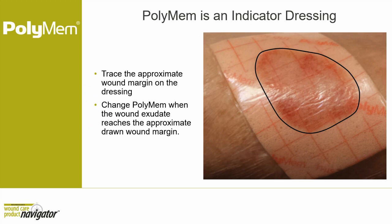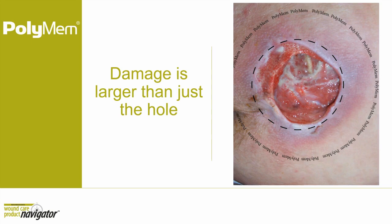PolyMEM functions as an indicator dressing. Clinicians are encouraged to draw the approximate wound margin on the top of the dressing so that as exudate is drawn in, it appears first in the center of the marked circle. When exudate reaches the drawn margin, it's time to change the dressing. When applying PolyMEM over a deep cavity, use a cavity filler, but also ensure coverage extends over the peri-wound area that may be swollen, tender, itchy, or inflamed. PolyMEM works not just in the skin but in the deep tissue as well — providing three-dimensional healing support.